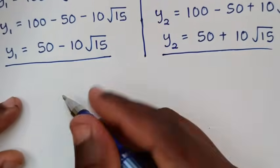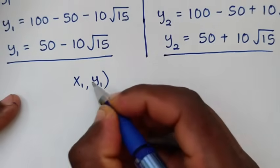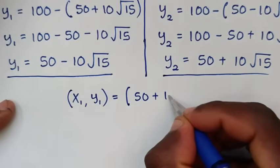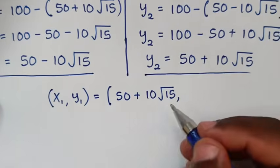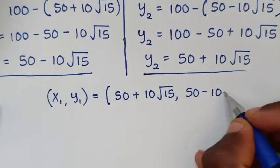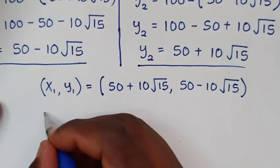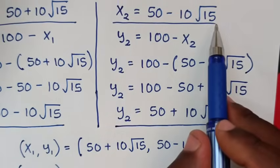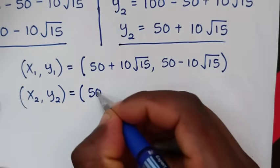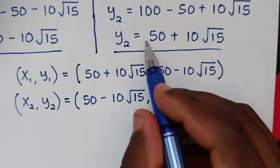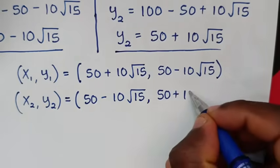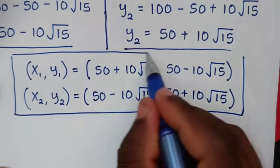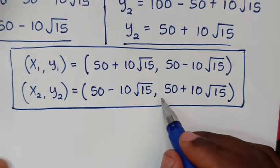Therefore our conclusion: the first solution pair is x1 equals 50 plus 10 square root of 15 and y1 equals 50 minus 10 square root of 15. The second solution pair is x2 equals 50 minus 10 square root of 15 and y2 equals 50 plus 10 square root of 15. These are the two solutions to our problem.